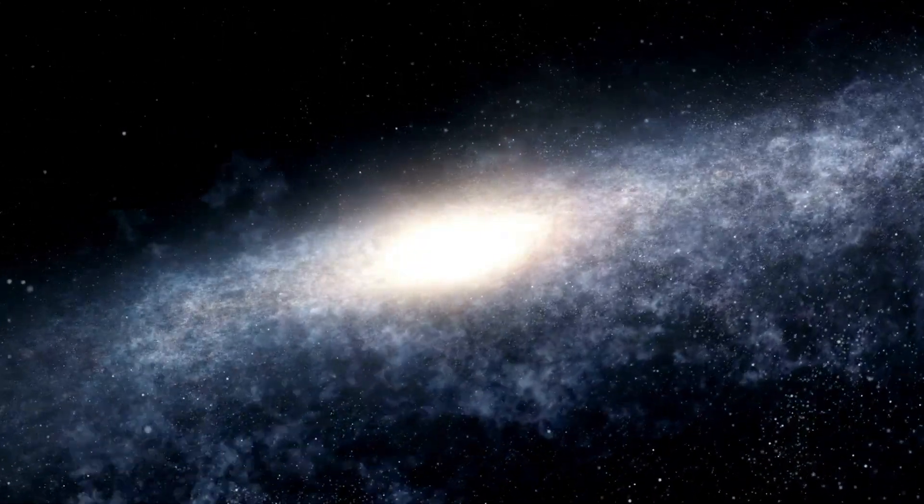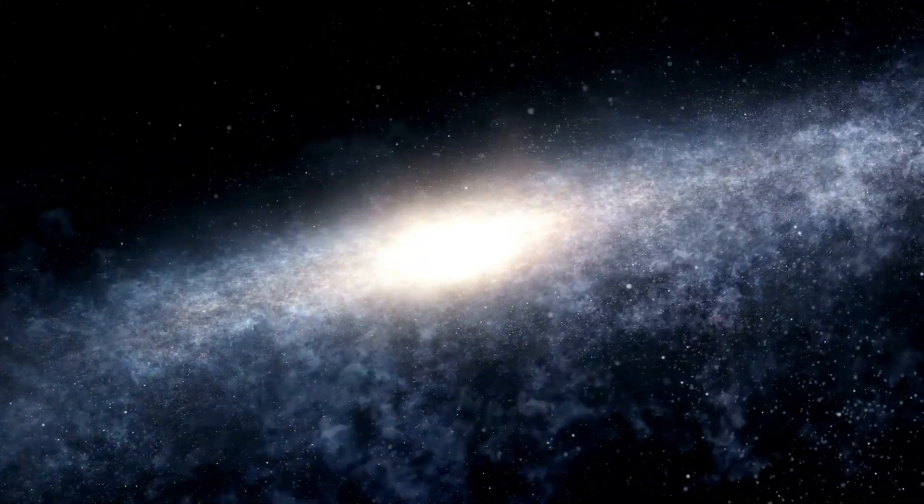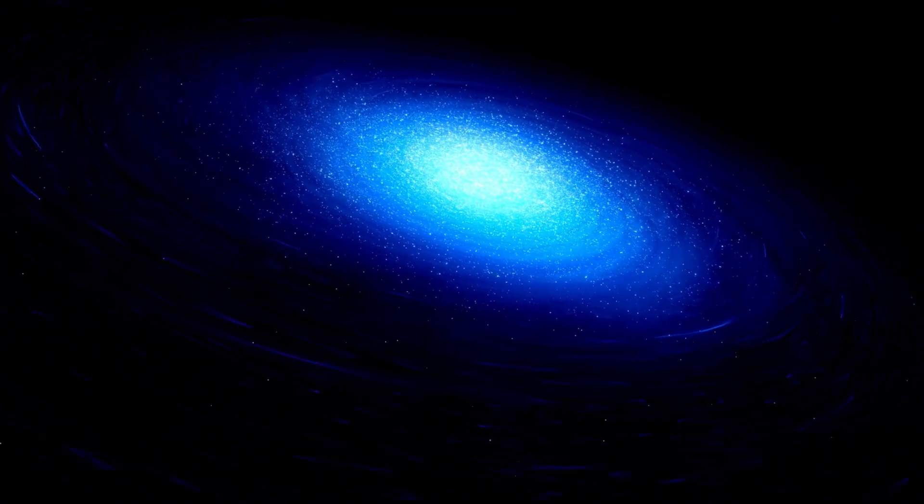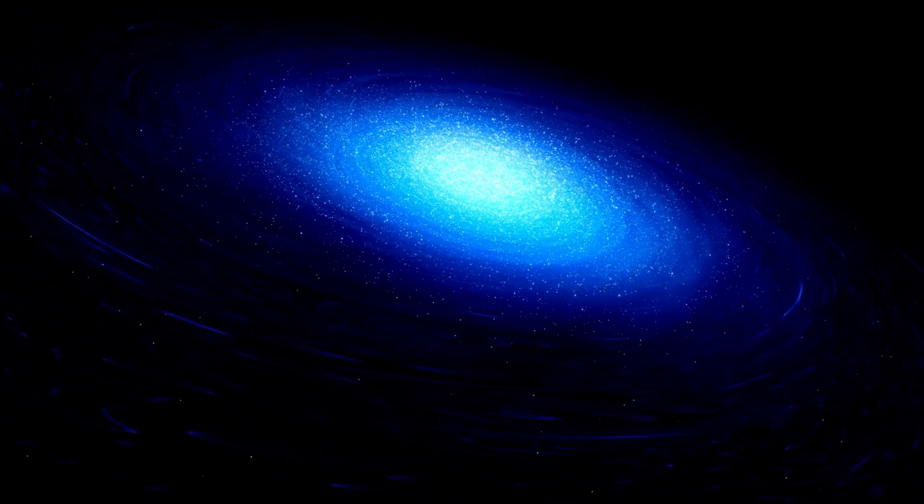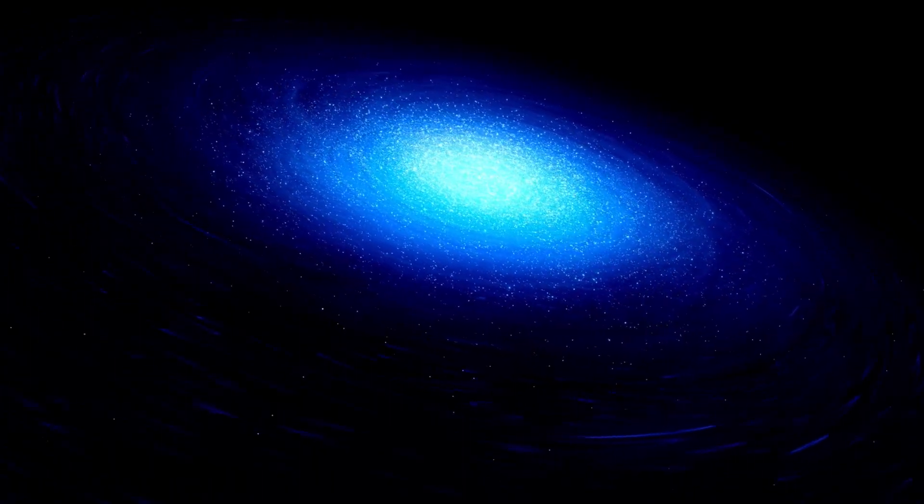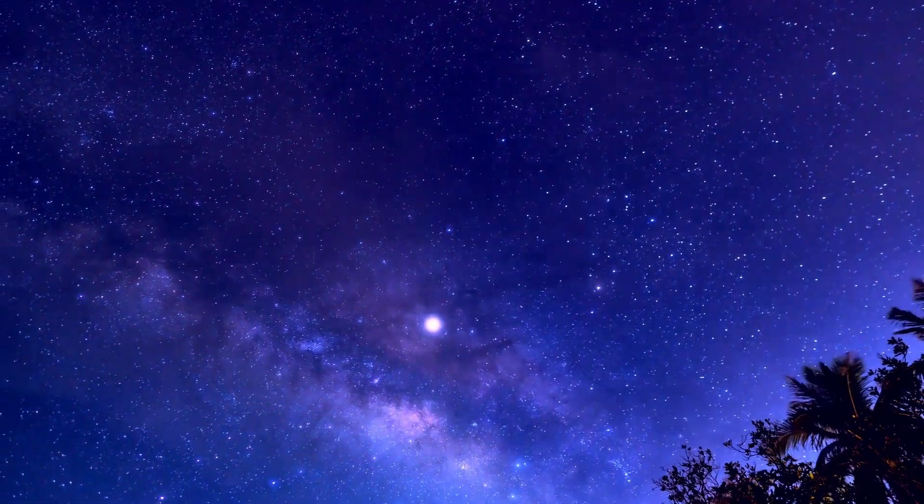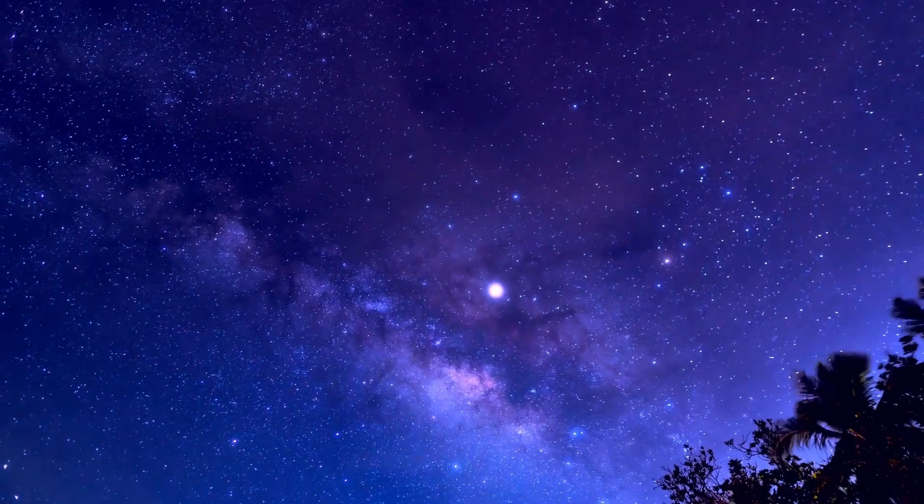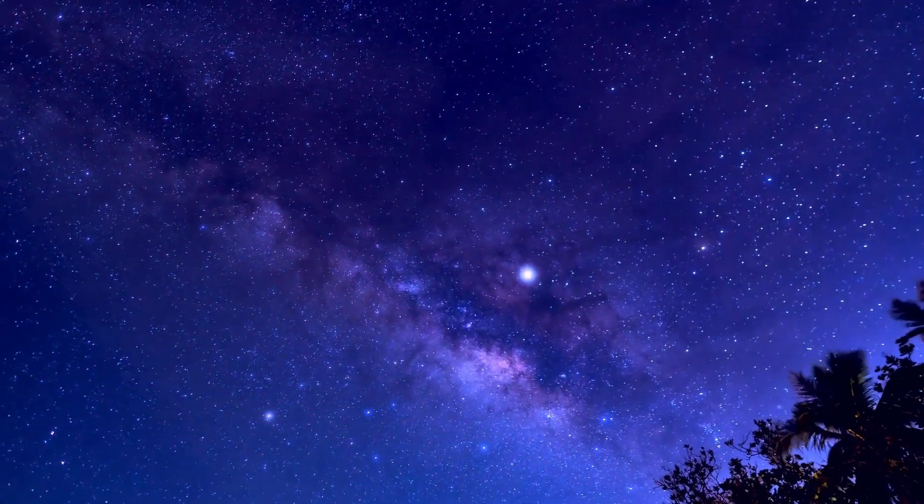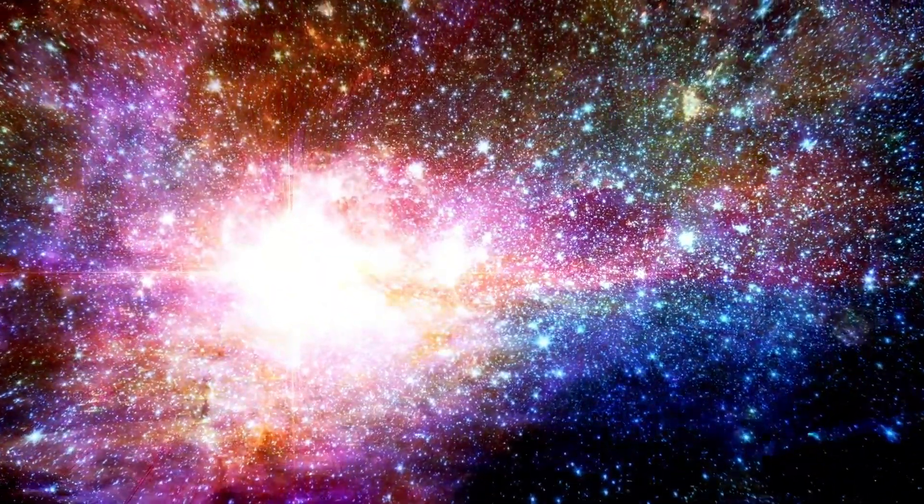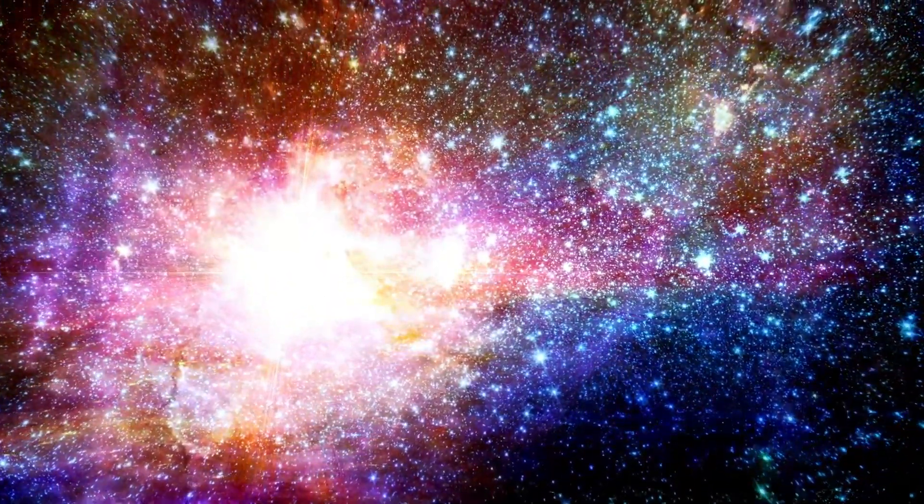Betelgeuse's immensity is staggering. If placed at the heart of our planetary system, its outer surface would extend past Jupiter's orbit. This giant star, easily noticeable, continues to enamor us. Unlike most stars, Betelgeuse changes apparently over time because of its nearness to our system. Named a semi-regular variable star, its brilliance fluctuates consistently, moving toward a potential great breakdown in a supernova blast.